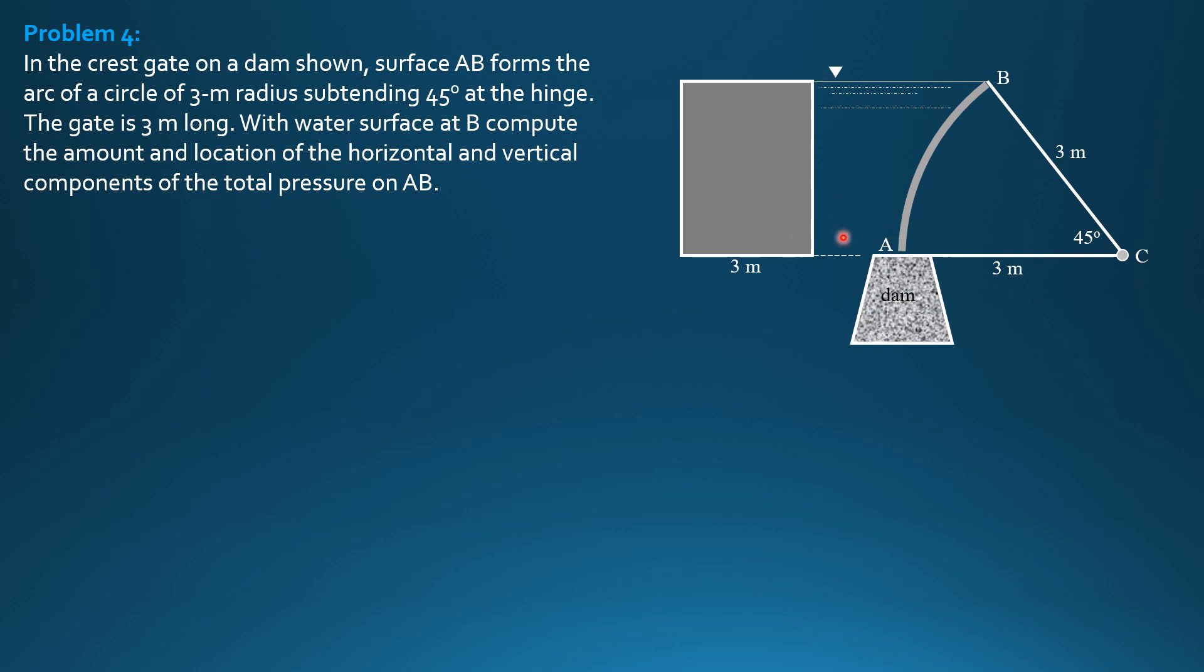And that's the net height of the vertical projection of the area to be analyzed, is 3 sine of 45. So that's 3 sine of 45. The gate is 3 meter long. So that's why this is 3 meters.